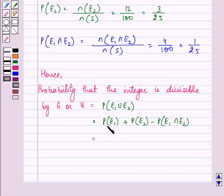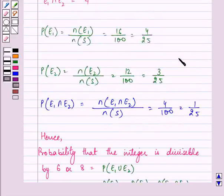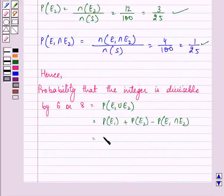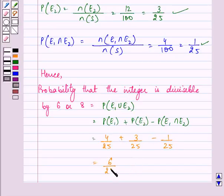Now, let us substitute the values of probability of E1, probability of E2 and their intersection that we got above. So, that is equal to 4 upon 25 plus 3 upon 25 minus 1 upon 25. Taking the LCM and adding and subtracting the numerator, we get 6 upon 25. That is the required answer.